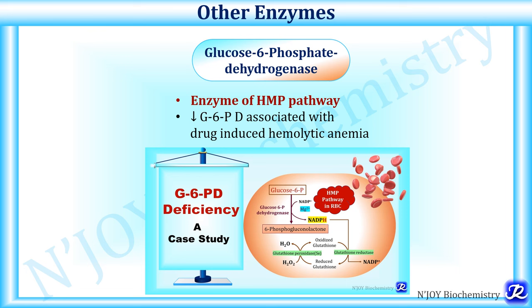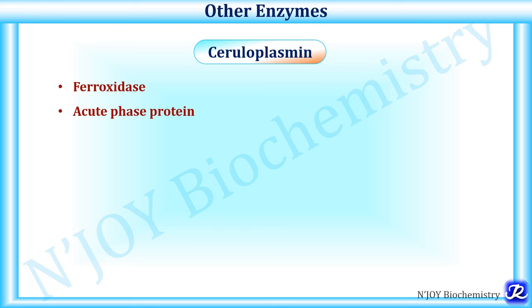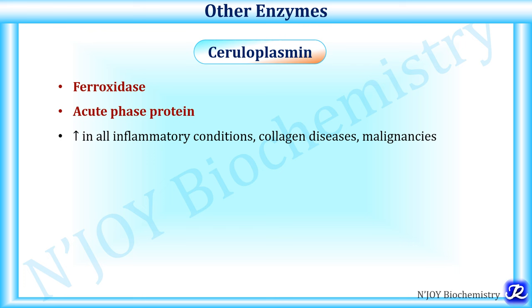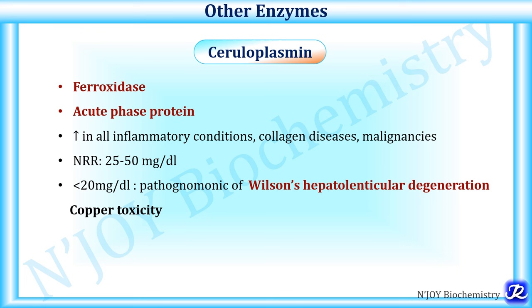Glucose-6-phosphate dehydrogenase (G6PD) is an important enzyme of the hexose monophosphate pathway. Decreased levels of G6PD are associated with drug-induced hemolytic anemia. Ceruloplasmin is a ferroxidase acute phase protein, and is increased in all inflammatory conditions, collagen diseases, and various malignancies. The normal reference range is 25 to 50 mg per deciliter. If it is decreased below 20 mg per deciliter, it is pathognomonic of Wilson's disease (hepatolenticular degeneration), indicating copper toxicity.